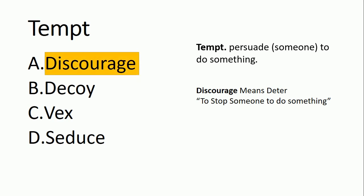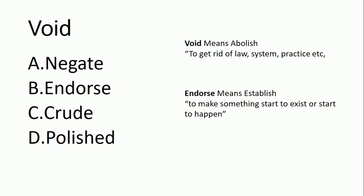Void means to abolish — to get rid of a law, system, practice, etc. To eliminate a law or system. Its antonym is endorse, which means to establish. Abolish and establish are antonyms of each other. Void's antonym is endorse. We are considering four words that are antonyms of each other.